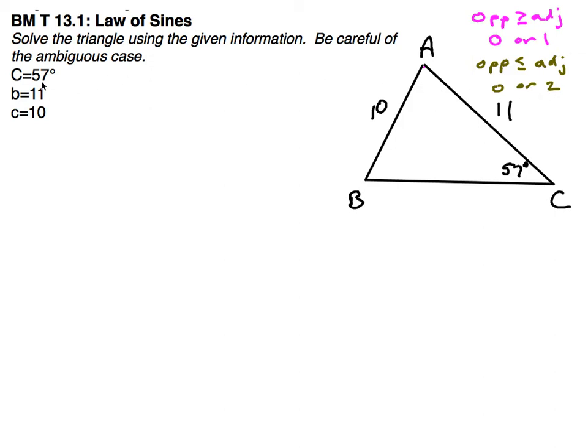In this case, our angle is 57, the opposite side is 10, which is less than the adjacent side. So there's a possibility that we will have two solutions here.